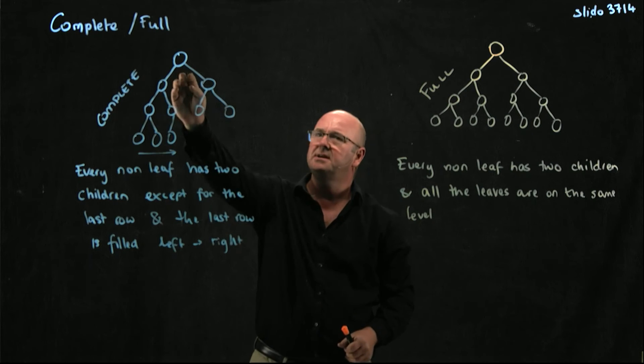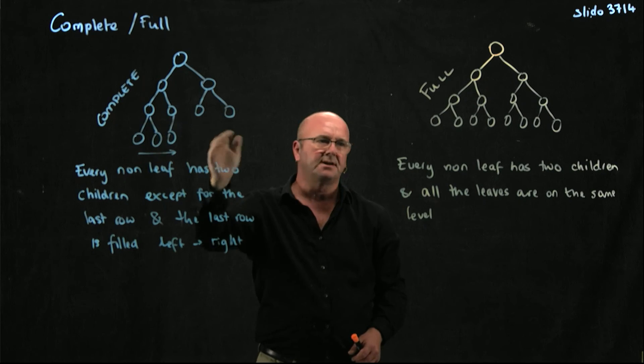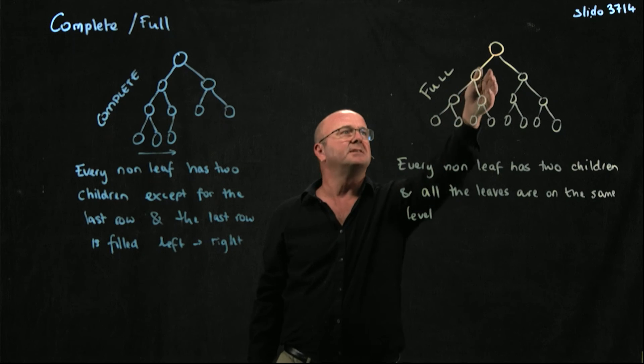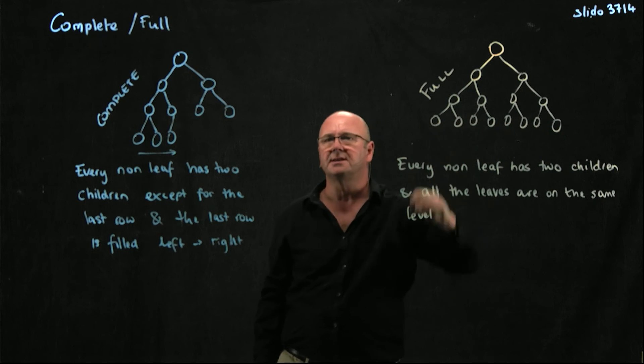So, a complete tree means that we've always got two children, and we're filling it from left to right on the last row. And a full tree means that every node has two children, plus all of those leaves are on the same level.